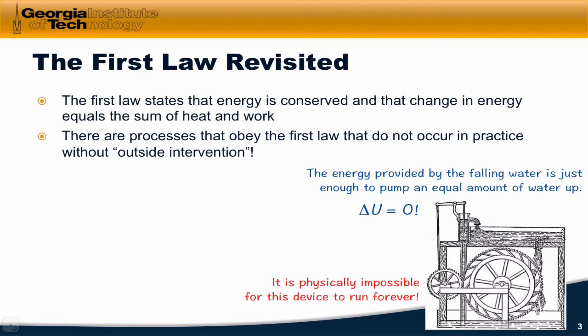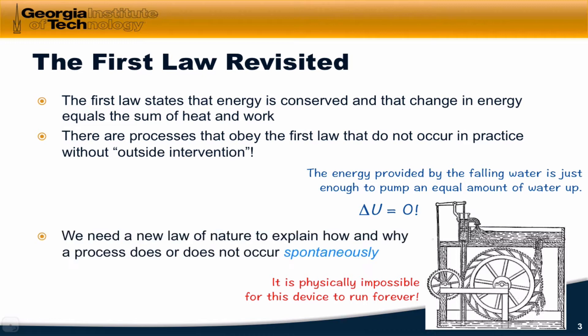However, we would find empirically that it is impossible physically for this device to run forever. Eventually, such a device will come to a stop. Because this device obeys the first law in every way, shape, and form, but the process does not occur spontaneously, we need a new law of nature to characterize spontaneous processes. That's what the second law is concerned with — explaining why, on a deeper level, a water wheel like this won't run forever.